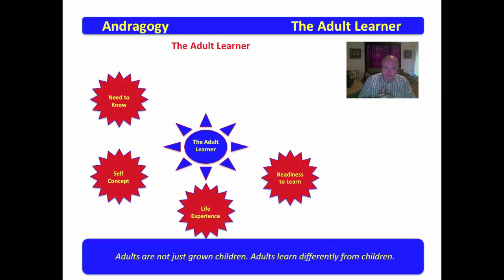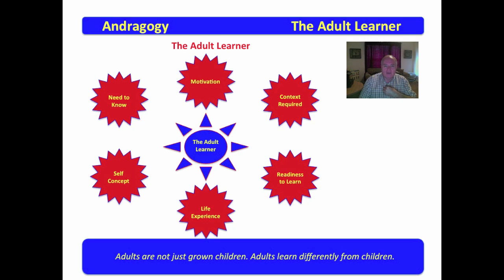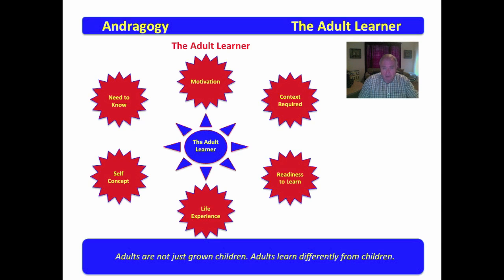Adults have a readiness to learn that must be engaged, and adults require context for the learning. Why is it important? How is this going to help me? What's it going to do for me if I learn this? Motivation is very important in the teaching of adults. So the adult learner has a need to know; self-concept is important; they bring many different life experiences to the table; they have a readiness to learn; the context of the learning is required. If you can show them why it's important, make it fit their context, and value their life experiences, then adult learners can be motivated to take charge of their own learning.